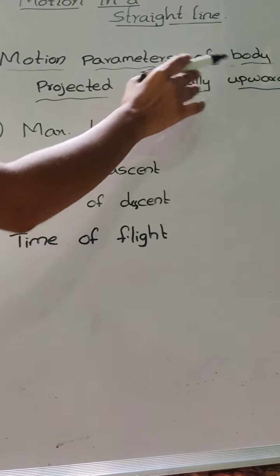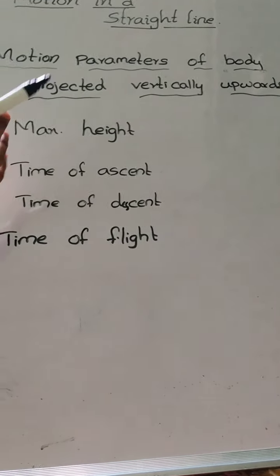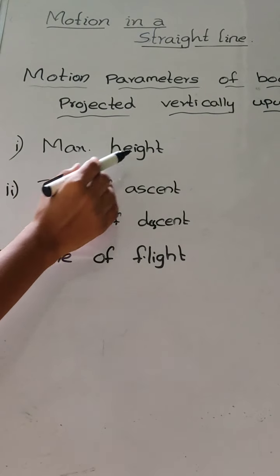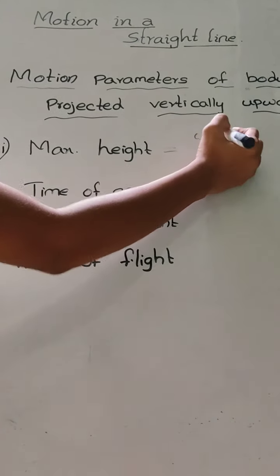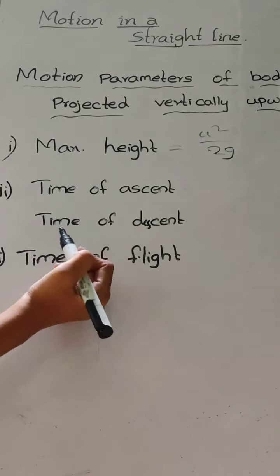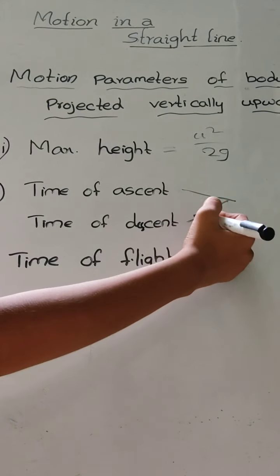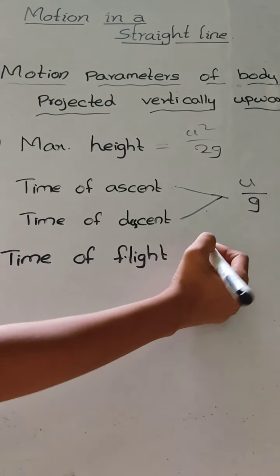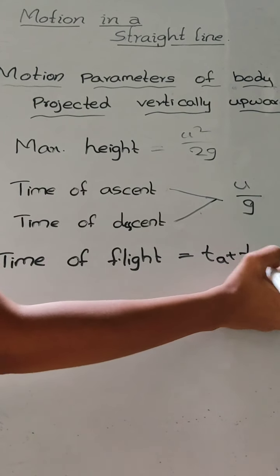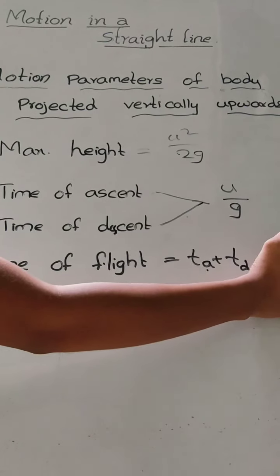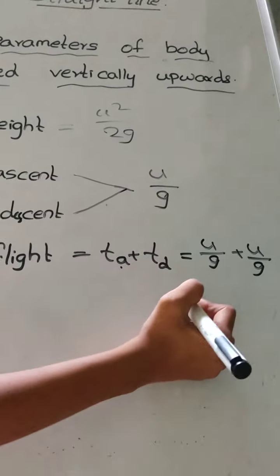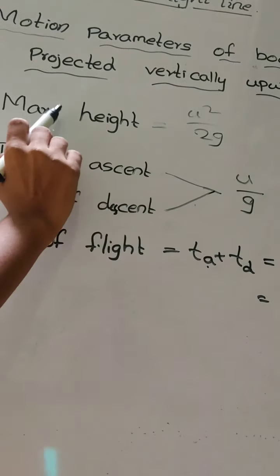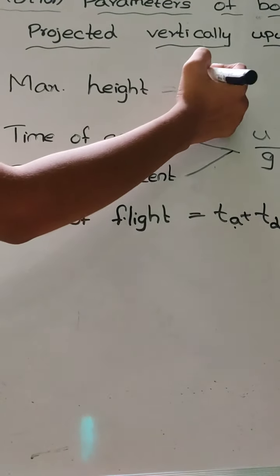Now let us see the formulas for motion parameters of a body projected vertically upwards. If any object is thrown upwards, for maximum height the formula is H max equal to U square by 2G. For time of ascent or time of descent, the formula is U by G. Time of flight equals time of ascent plus time of descent, which gives 2U by G. So: time of ascent = time of descent = U by G, and maximum height H max = U square by 2G.